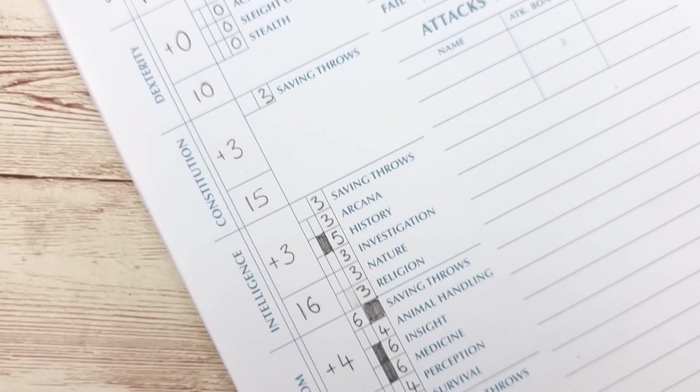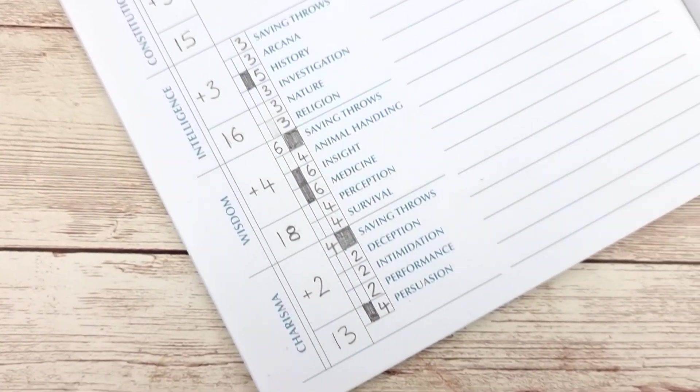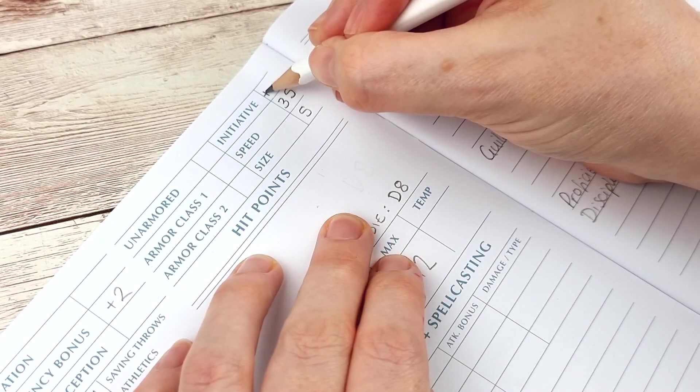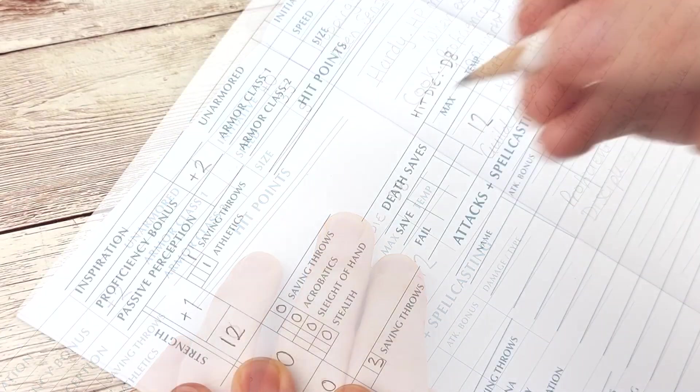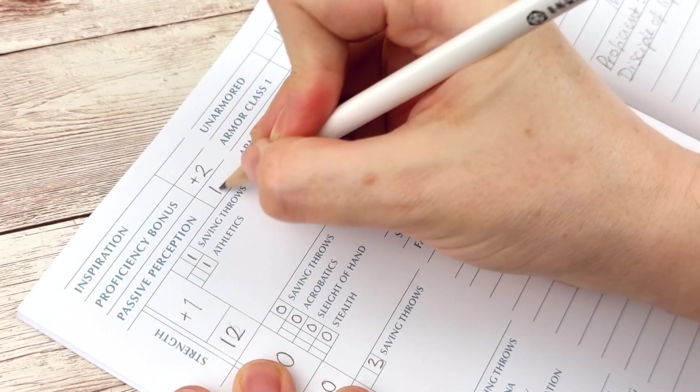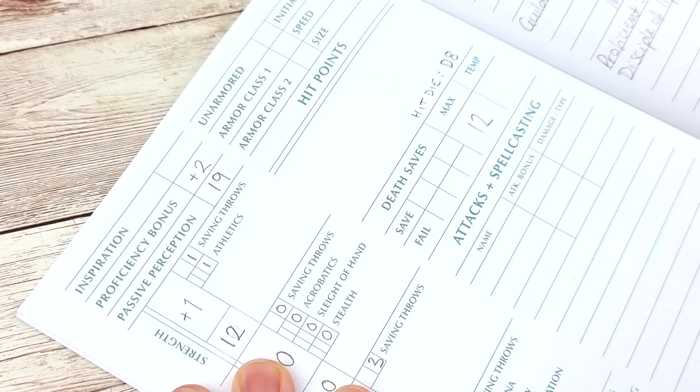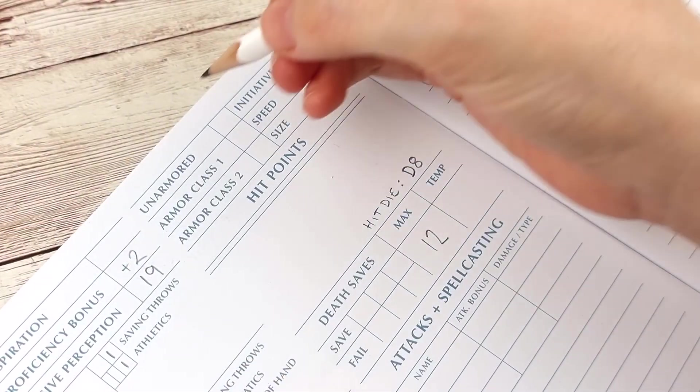Let's finish off this sheet now with the final few numbers. This is very easy. Your initiative is equal to your dexterity bonus. For passive perception this number should be ten plus whatever your perception skill bonus is. Your armor class is important.